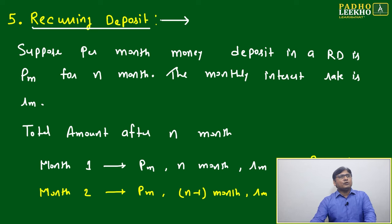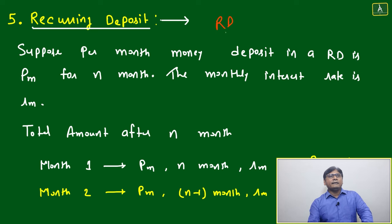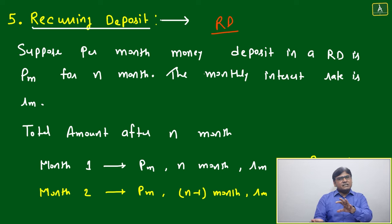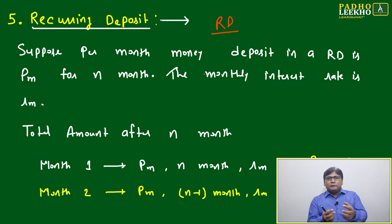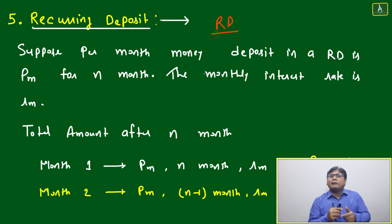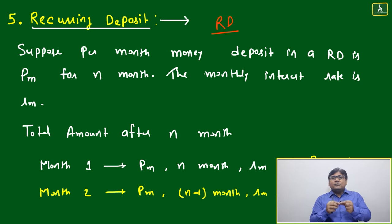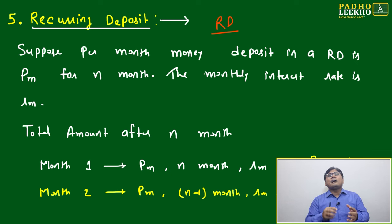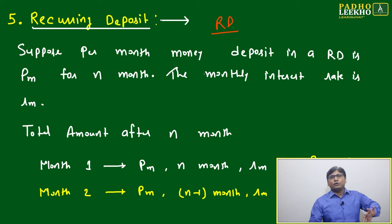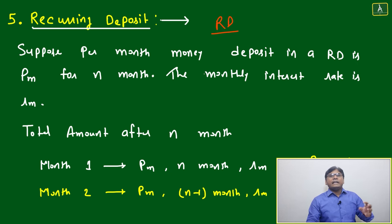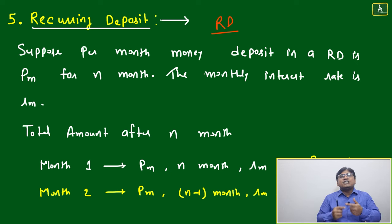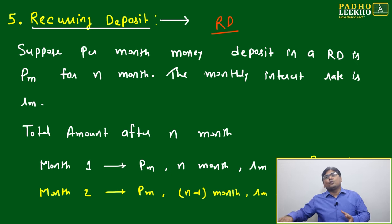Welcome. One of the things we generally do as middle class is called RD — Recurring Deposit. What is a recurring deposit? It's just the reverse of EMI. In EMI, we take money and pay it back monthly in equal installments. In a recurring deposit, we deposit a certain equal amount every month, and after a certain number of years we collect the total matured amount.